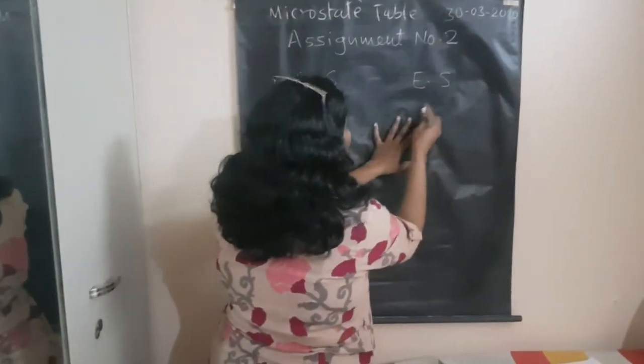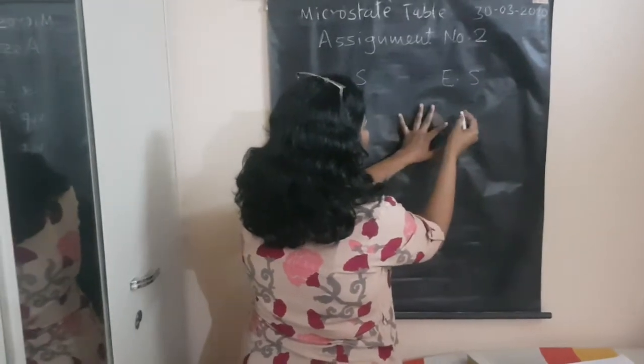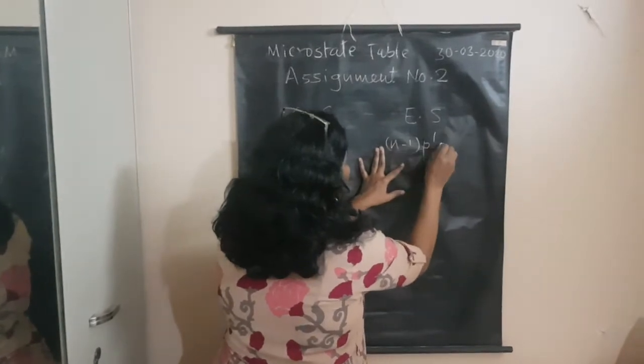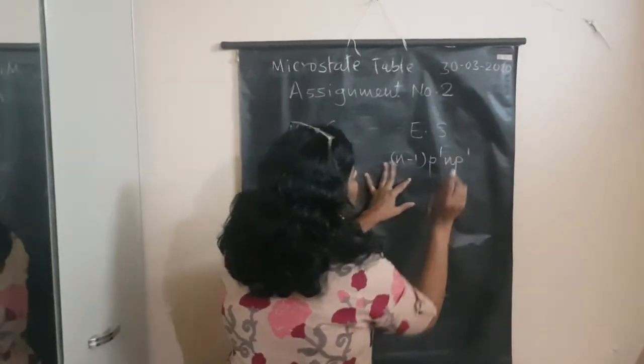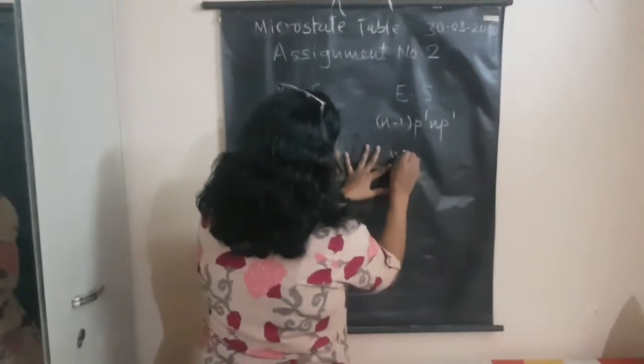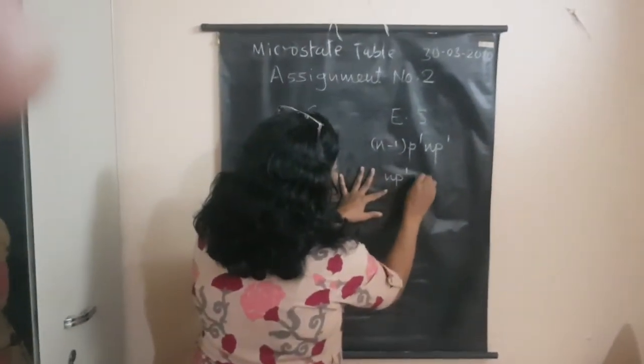For excited state, we have seen the last two videos. One is Ns1 Np1. This is one excited state configuration. Second configuration is Np1 Nd1.